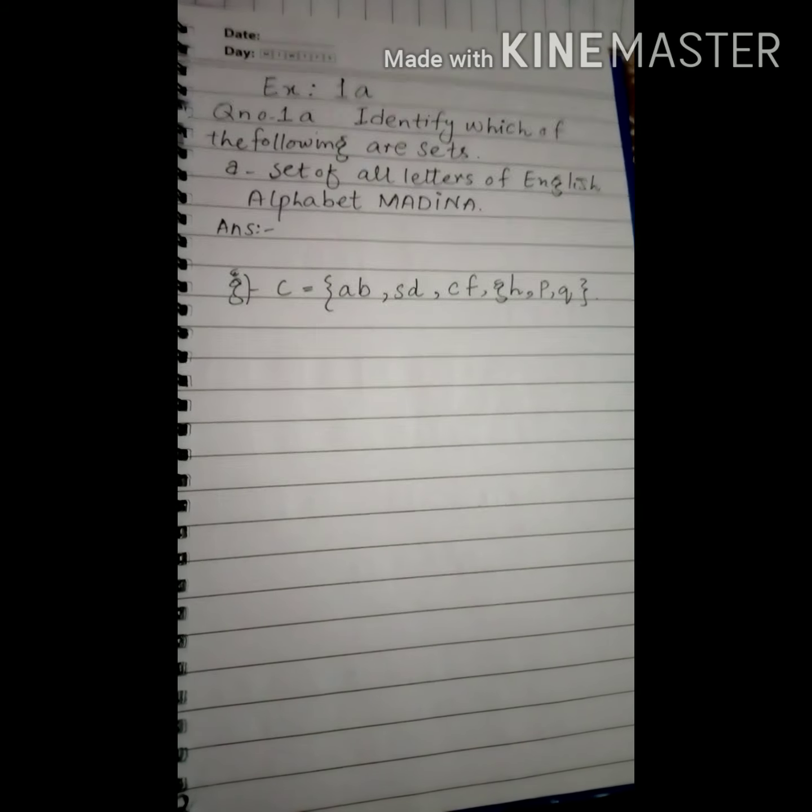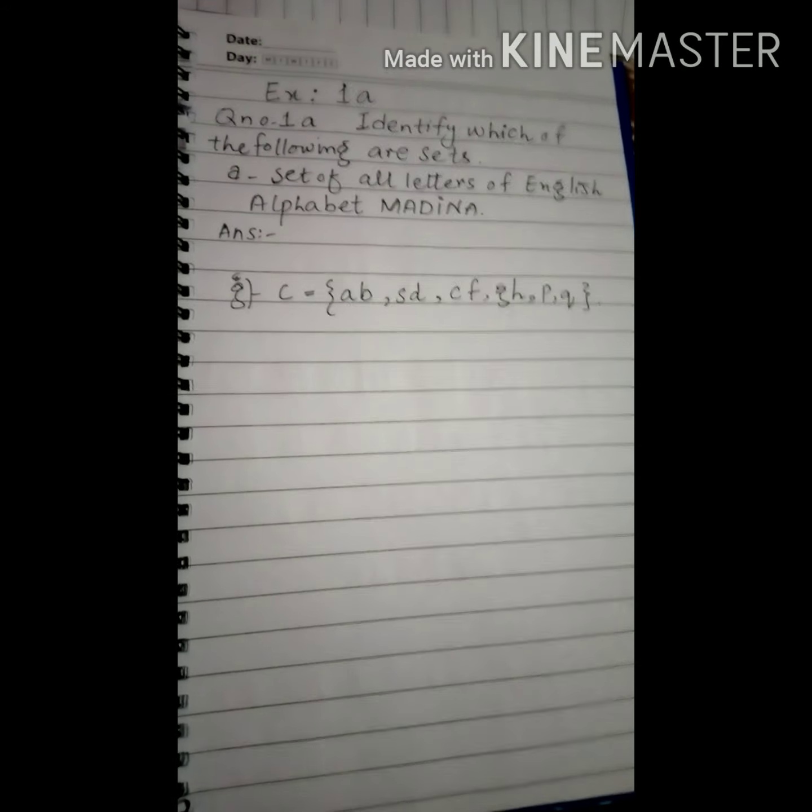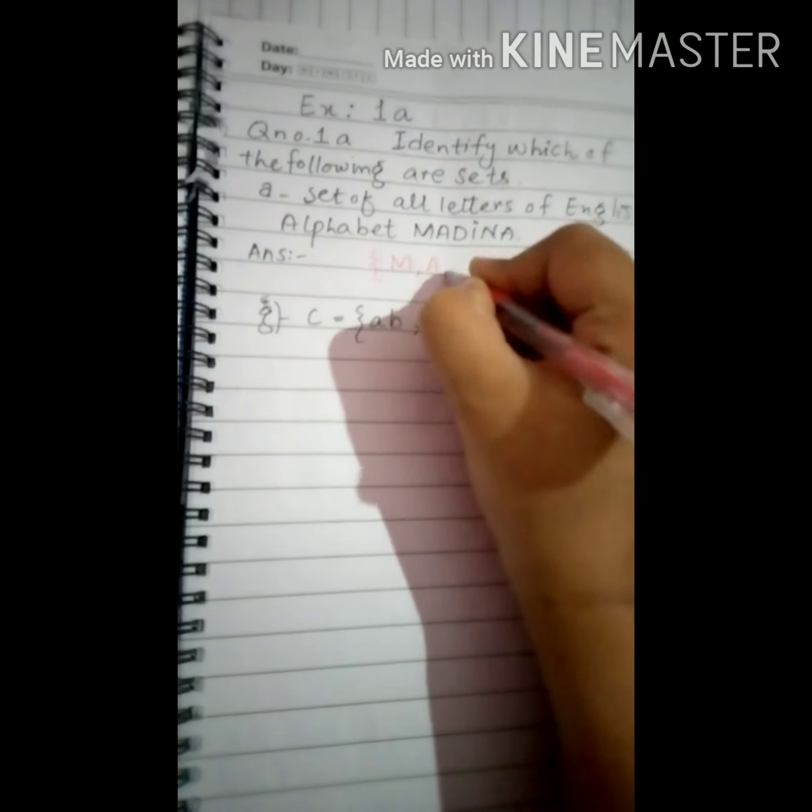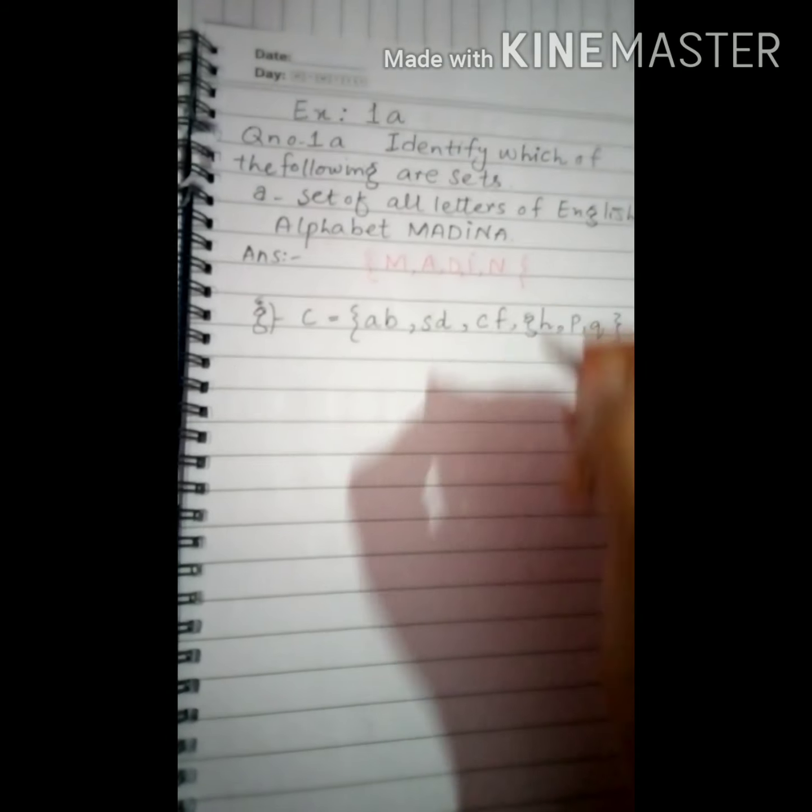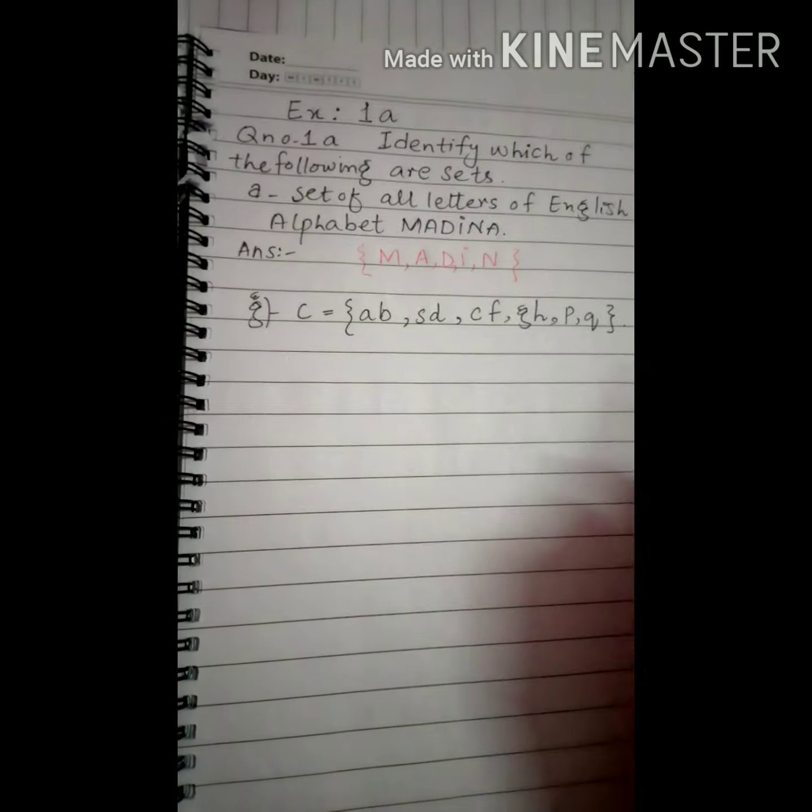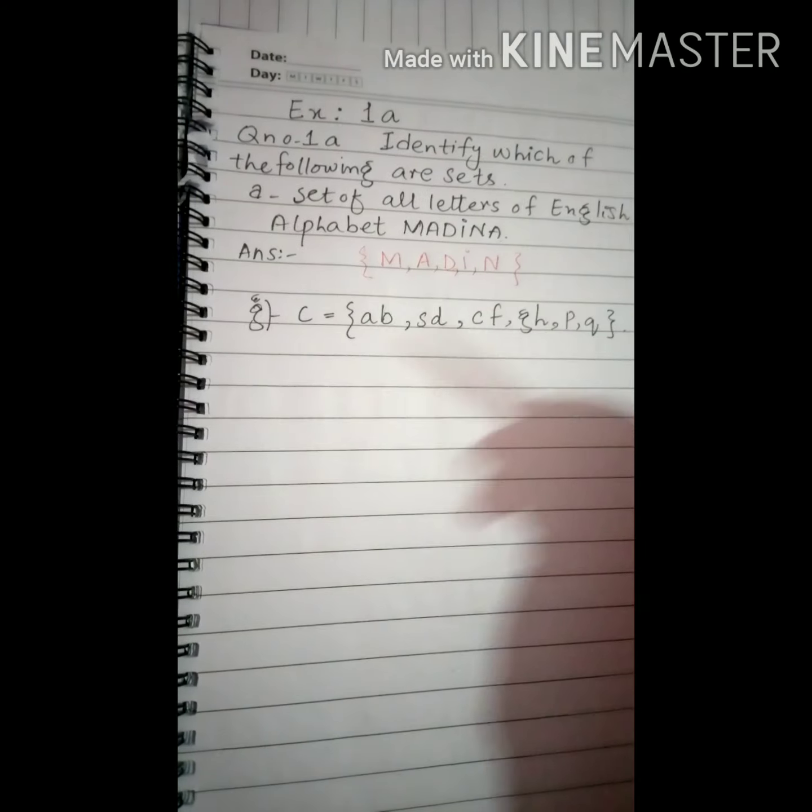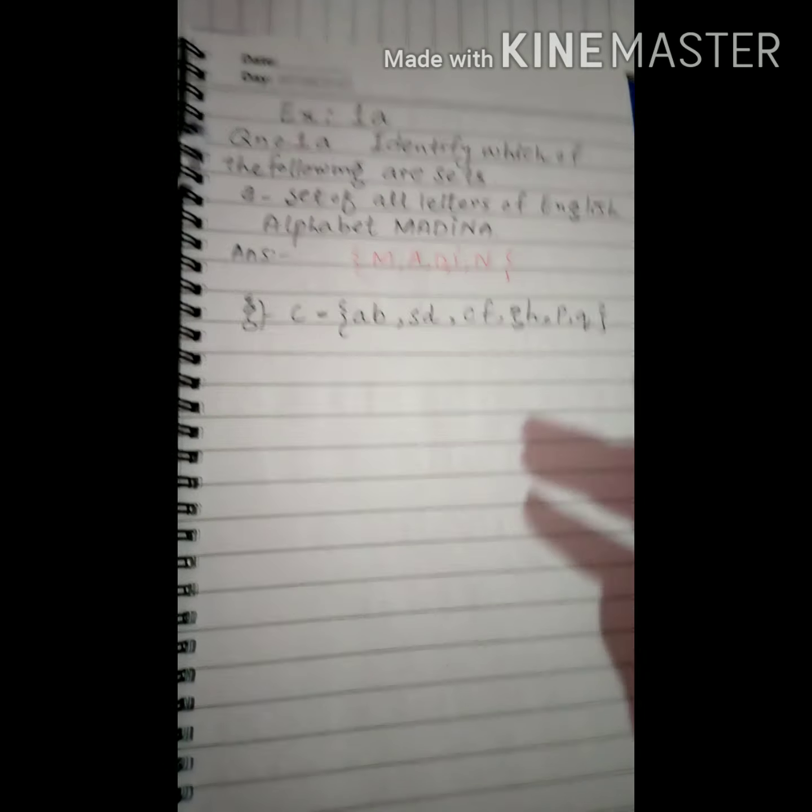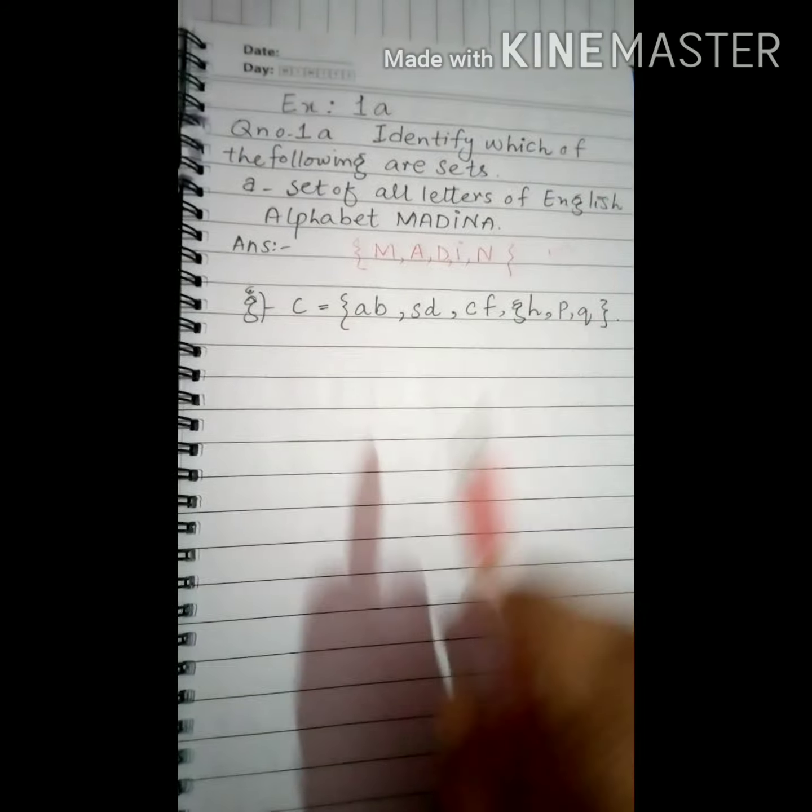MADINA - I think you all understood very well what we need to write. We need to write such a set which contains the letters of MADINA. Now someone might ask why we didn't write the letter N twice - because I just told you that repetition is not allowed. So this set can be written and it is very well defined. It proves all three things - it is well defined, secondly it has a collection of letters, all the letters are distinct. So we can write this as a set. This is the set of distinct letters.